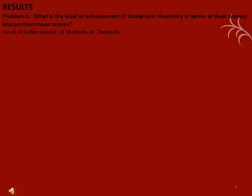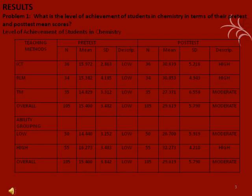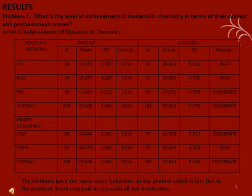The results of the specific problems are as follows. Problem 1: What is the level of achievement of students in chemistry in terms of their pre-test and post-test mean scores? Based on the table, the students have the same entry behavior in the pre-test, which is low, but in the post-test there was a gain in scores in all the treatments and the level of achievement was moderate.